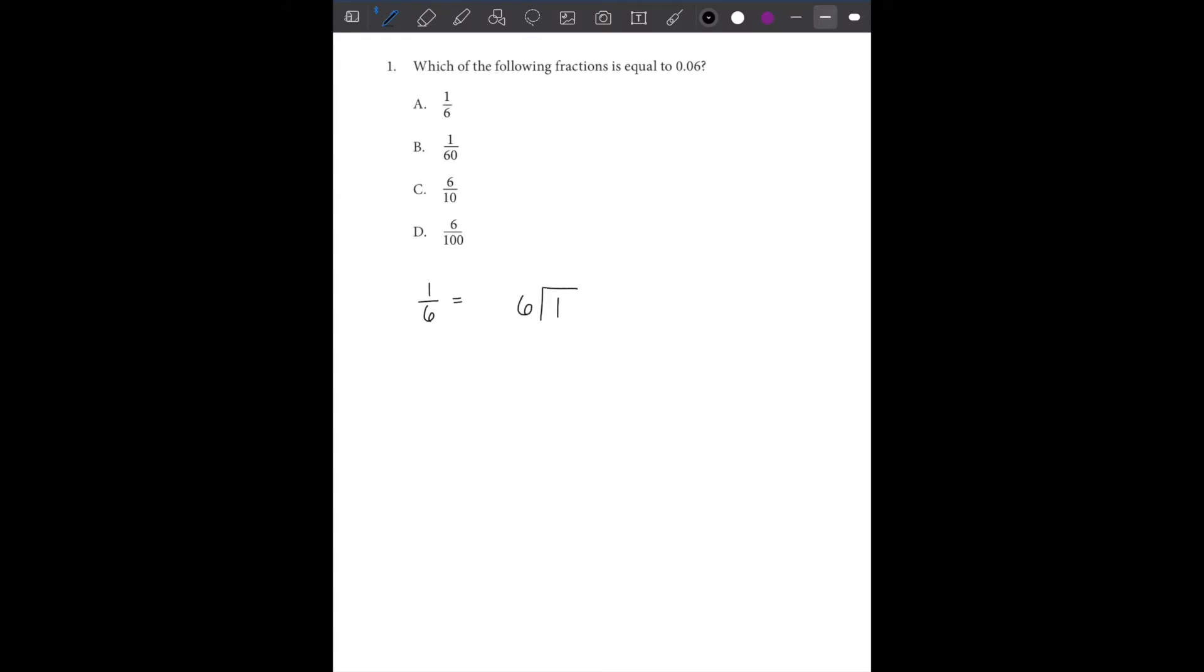So this is the first step. You're going to do 1 divided by 6. You know that 6 cannot go into 1, so we're going to put a decimal here, put a 0 there, and extend this line up top. Now we know that 6 can go into 10 once. I'm going to put a decimal there. You can put a 0 here if you want. So now we're going to do 1 times 6 is 6, we subtract that, we get 4. We're going to continue, add another 0 here, bring that 0 down. We get 40. How many times can 6 go into 40? We know that's going to be 6.